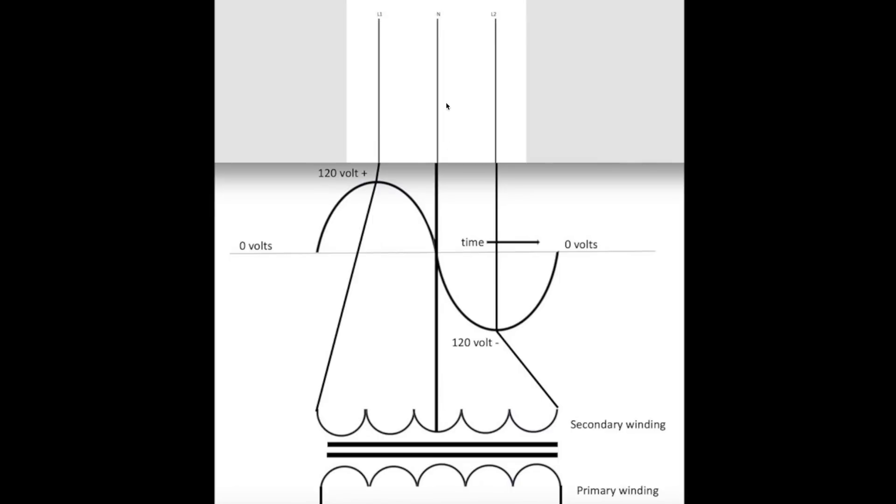Now I put this center tap in here, and it's half of this secondary winding. So if I actually tapped from here to here, I would get 120 volts instead of the 240, so I'd just get half, because that is a center tap.